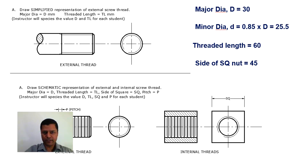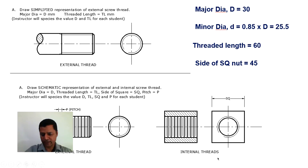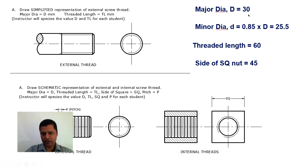Okay students, this is our second lab session. Today we will see how to draw the simplified representation for the external thread with side view, then the schematic representation for the external thread with side view, and also for the internal threads. This is a square nut of size 45; we will take major diameter equal to 30 millimeters for all these shapes.